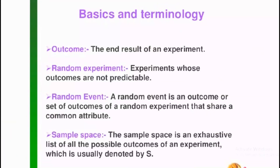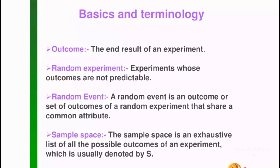Binomial Probability Distribution — let's start with basic terminology. This is a basic terminology. This is an outcome, and this is an end result. This is a random experiment. This is an outcome predicted by the experiment.